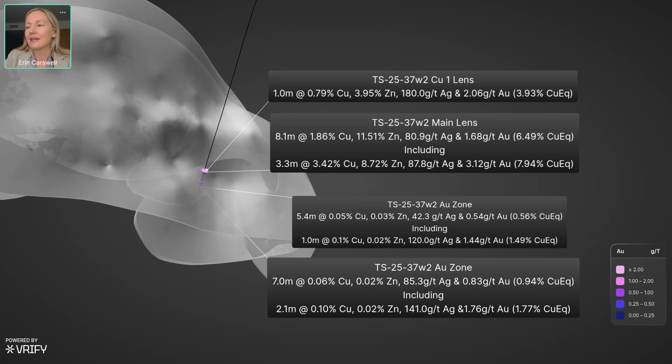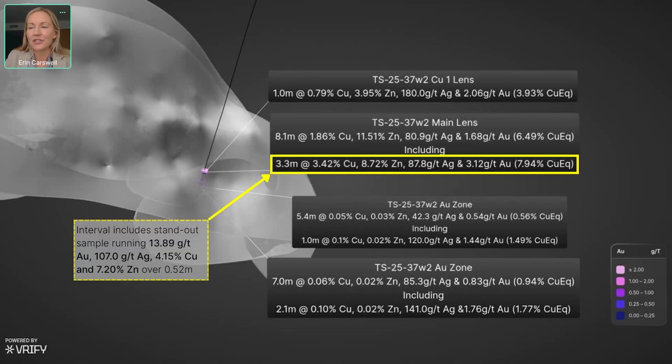So we'll start up with the Copper 1 lens. Now this one is normally quite a thin lens that sits directly on top of the main lens. Here it has a meter at 0.8% copper, nearly 4% zinc, 180 grams silver and 2 grams gold. Now that's a lot more gold than we typically see in this lens and more zinc for that matter as well.